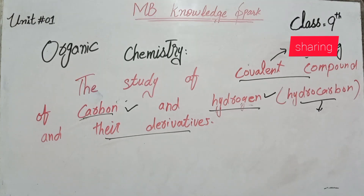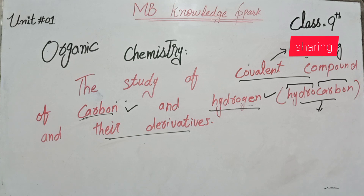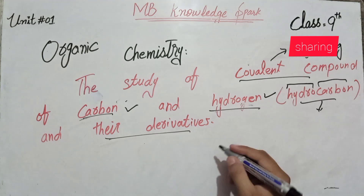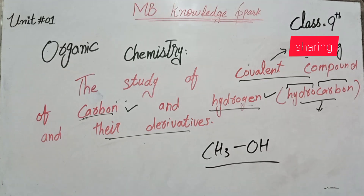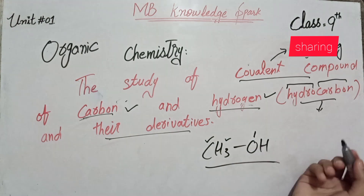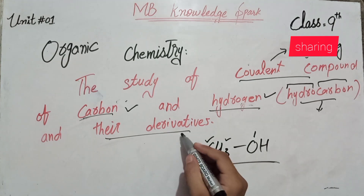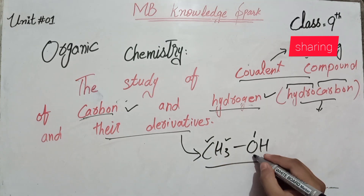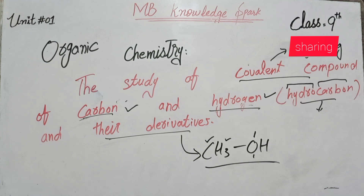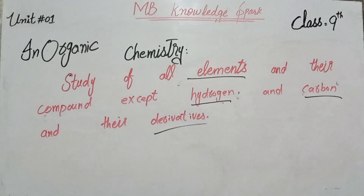Hydrocarbons are the combination of hydrogen and carbon. Compounds of carbon, hydrogen, and their derivatives are called organic chemistry. When we study carbon, hydrogen, and their derivatives, we call it organic chemistry. The derivatives are created from hydrogen and carbon. For example, this is an organic compound — carbon and hydrogen together — that is what we call organic chemistry.